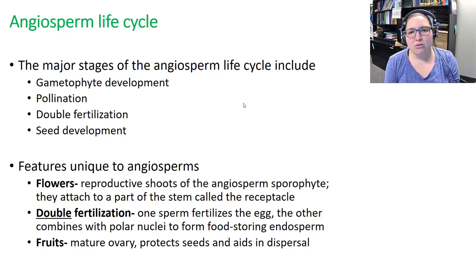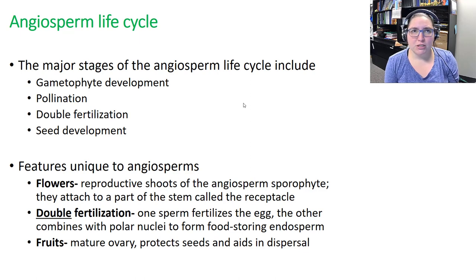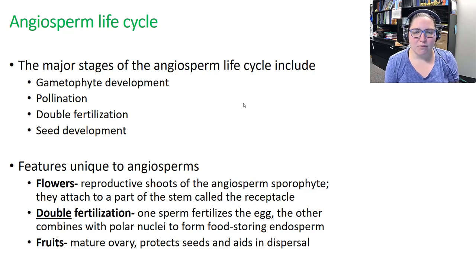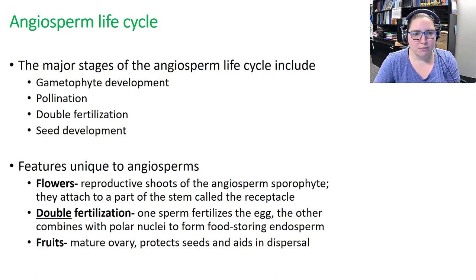In general, angiosperms must have gametophyte development occurring, they must have pollination, they must have double fertilization, and seed development. That's kind of where we're going in this chapter.